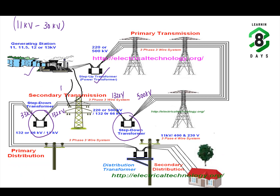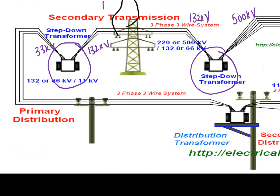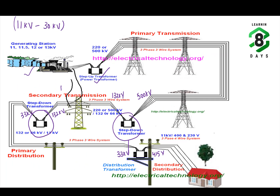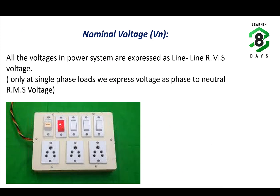After this stepping down, primary distribution starts. Primary distribution is carried by a three-phase, three-wire system. The voltage is stepped down again — for example, from 33 kV to 415 volts — and distributed at 415 volts to domestic customers. Industrial customers can be directly fed at higher voltages such as 132 kV or 33 kV, depending upon their requirement.